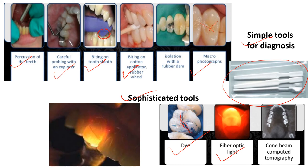With fiber optic transillumination, the light is passed through the tooth and the fracture line running mesiodistally becomes visible. CBCT is also used. These are the various diagnostic tools for crack tooth syndrome.